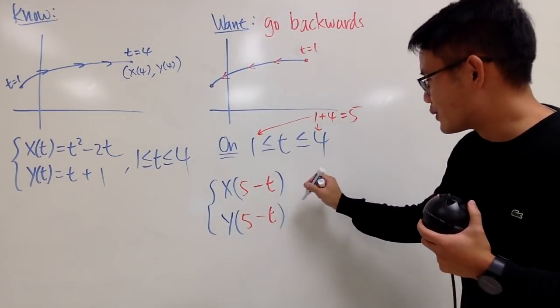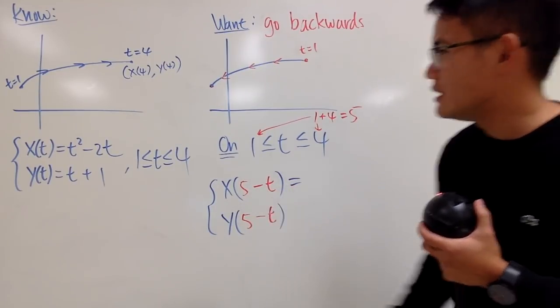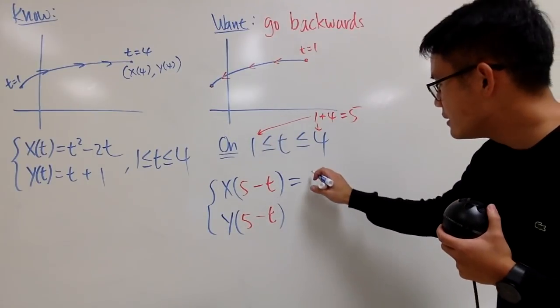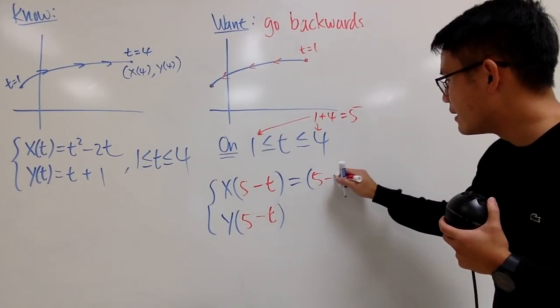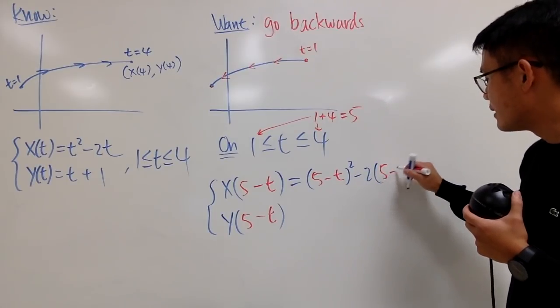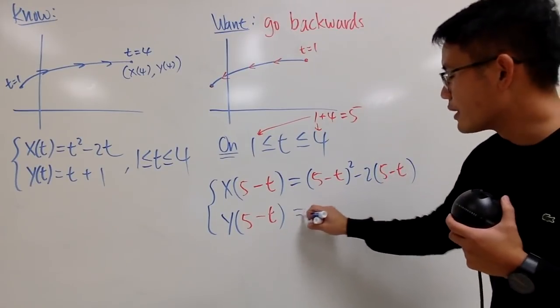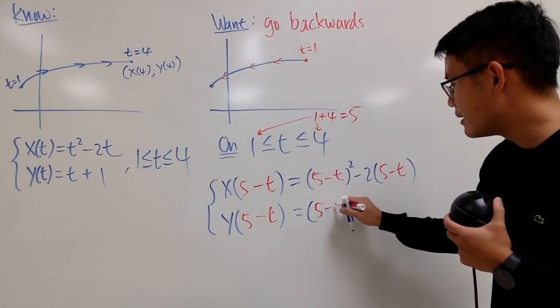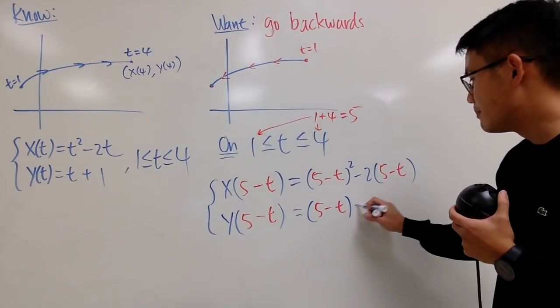So, I will just write this down for you guys. Plug in 5 minus t into this t and that t and also that t for the y later on. So, you see, this is going to be 5 minus t square minus 2 times 5 minus t. And then for the y equation, just plug in that. So, you get parentheses, 5 minus t and plus 1.